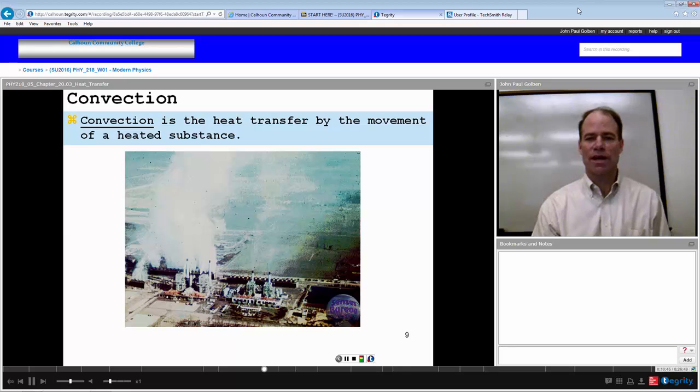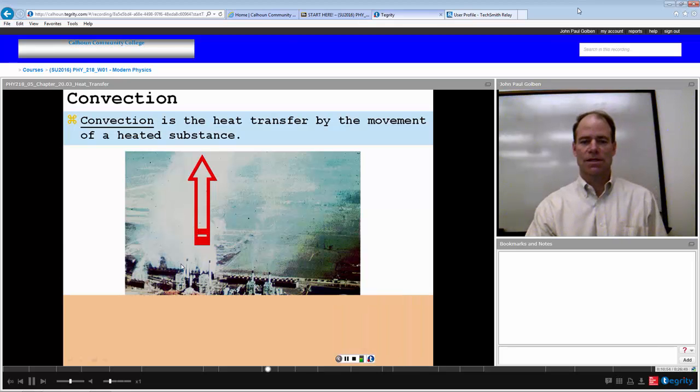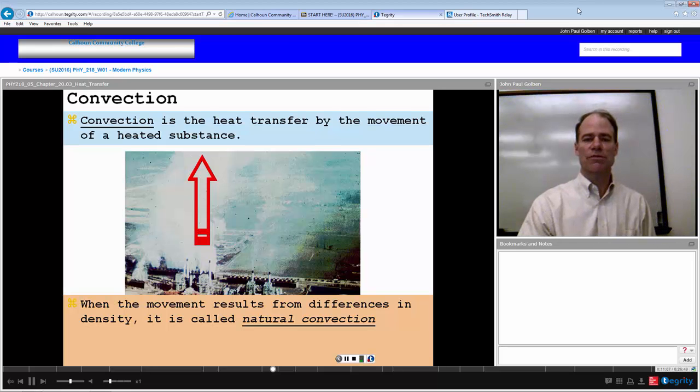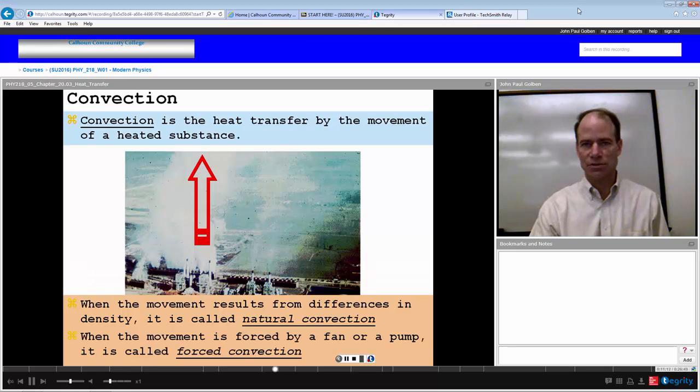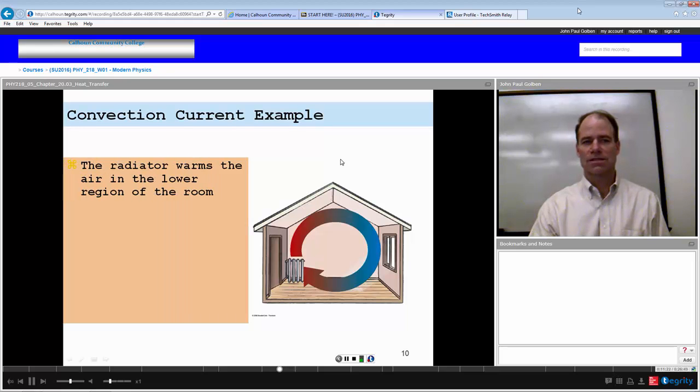We can also have heat transfer by the actual movement of the heated substance. This is called convection. So on these smokestacks, where the actual smoke is traveling as the heated substance from point A to point B, then that is convection. When the movement actually results from the differences in density of the gas, it's called natural convection. And when the movement is forced by a fan or a pump, it's called forced convection.